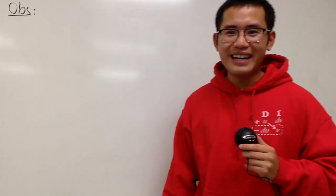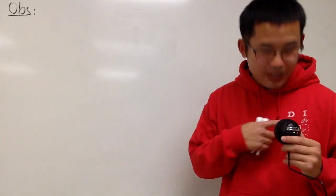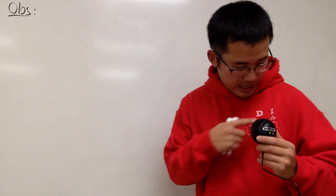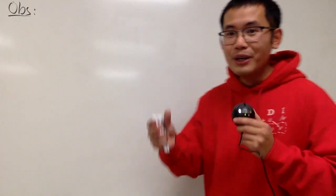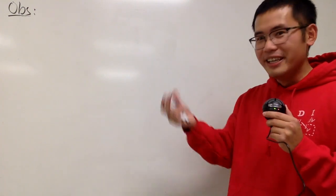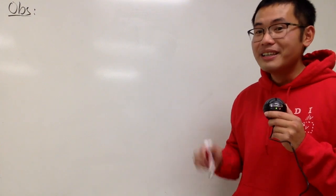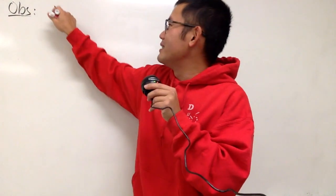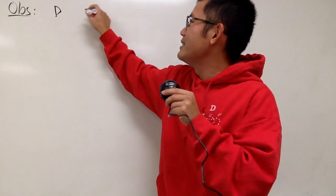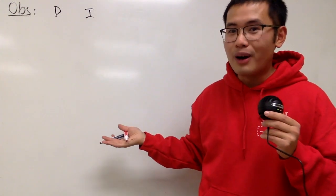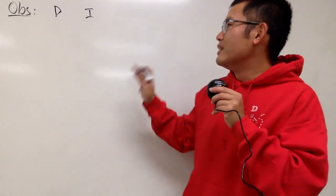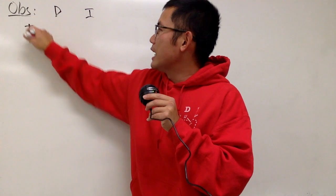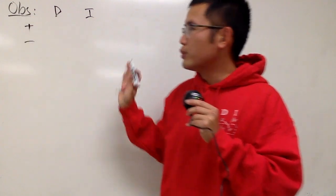What do I have on my shirt? This is the DI setup for integration by parts. And on the I column, you can just pick a function and keep integrating that. So I will show you how we can actually use the DI setup, which is just integration by parts, to come up with that formula. Let me begin with two rows.